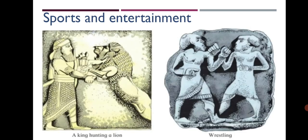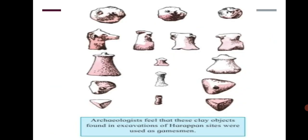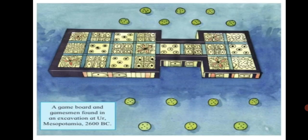Now let's learn about sports and entertainment. There were a variety of sports and means of entertainment in the ancient civilizations. Hunting and wrestling were important ones — you can see a king hunting a lion in the first picture, and a sculpture showing wrestling in the second. Games played with game boards and gamesmen were also popular. In ancient Egypt, people played a game similar to chess, known as Senat. In ancient China, there were also many games played with boards and gamesmen. Archaeologists feel that clay objects found in excavations of Harappan sites were used as gamesmen. Similar games were popular in Mesopotamia and the Harappan civilization too.